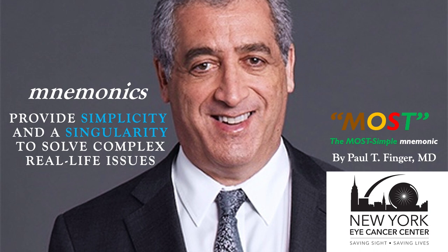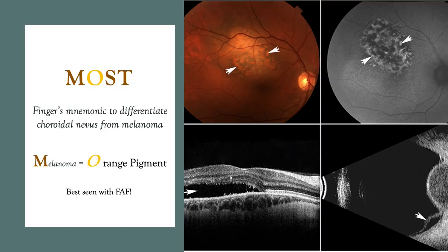Others have proposed a much more complex, difficult-to-remember mnemonic device that often leads to confusion and frustration. The next six slides will simplify your task of differentiating a choroidal nevus from a choroidal melanoma. I developed a mnemonic to help differentiate choroidal nevi from melanomas. The mnemonic is called MOST, where melanoma equals orange pigment, subretinal fluid, and thickness of two or more millimeters.